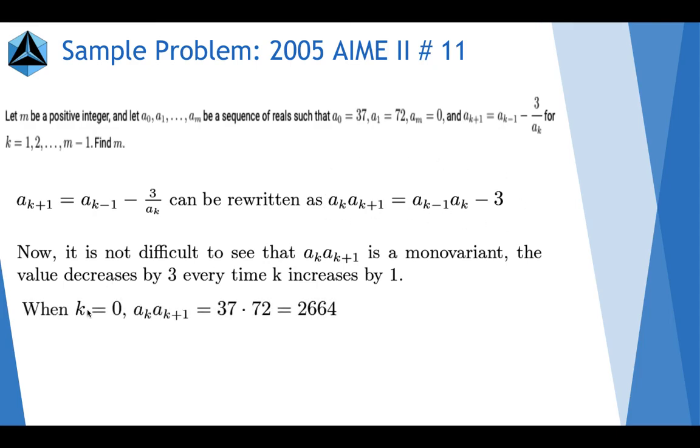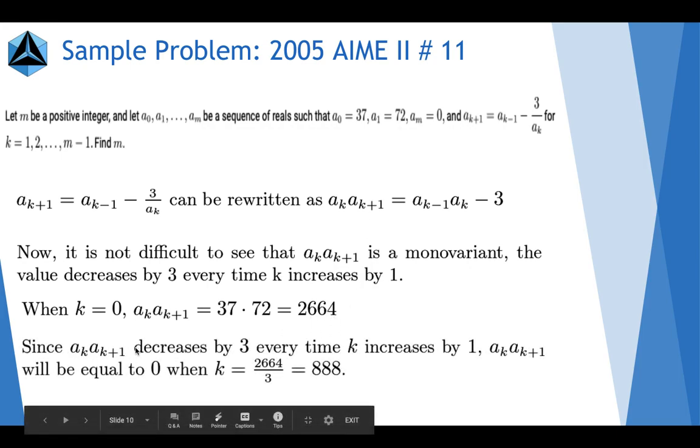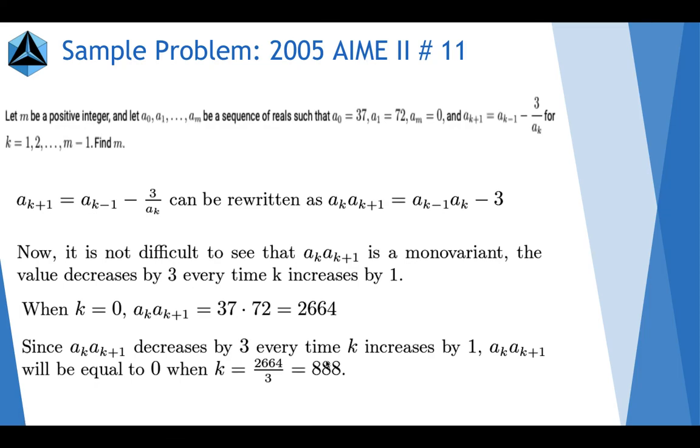When k equals 0, ak times ak plus 1 will get 37 times 72 because a0 equals 37 and a1 equals 72, which is 2,664. And since it decreases by 3 every time k increases by 1, this will be equal to 0 when k equals 2,664 divided by 3, or 888.